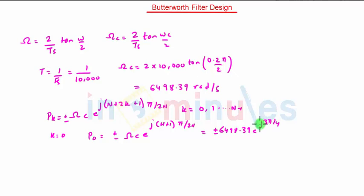So we will expand this e raised to j3π by 4. It will be plus minus 6498.39 cos of 3π by 4 plus j sin of 3π by 4.